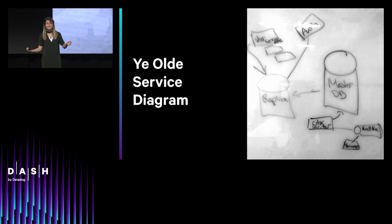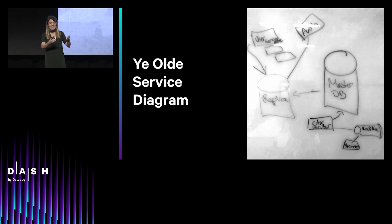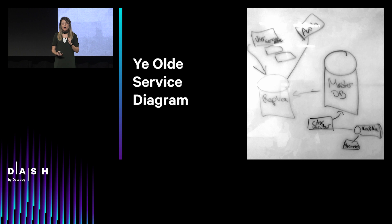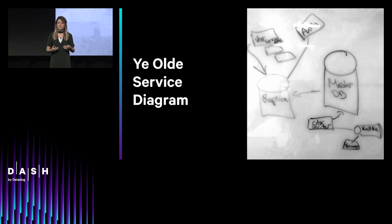We do things like ye olde service map. Many of you in this room are familiar. We've all whiteboarded and Visioed this. But they take a lot of time and they're very quickly out of date. You can all relate to showing up to a job and being handed an out-of-date service diagram — it's close enough. But we still do it. Why? Because they're useful. Because connections matter. It's essential to how we run our teams and how we run our businesses.